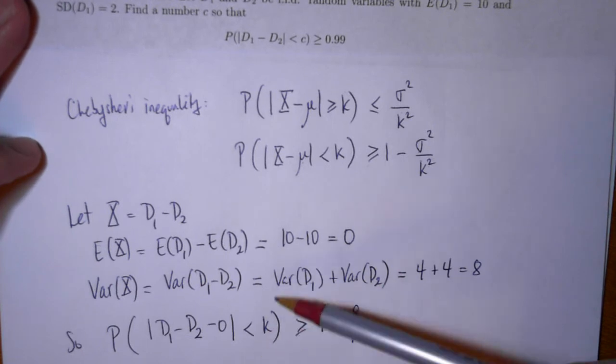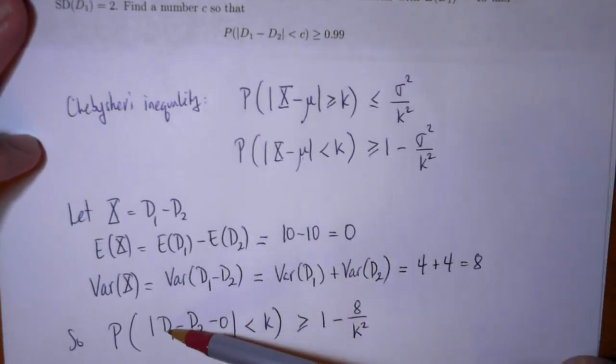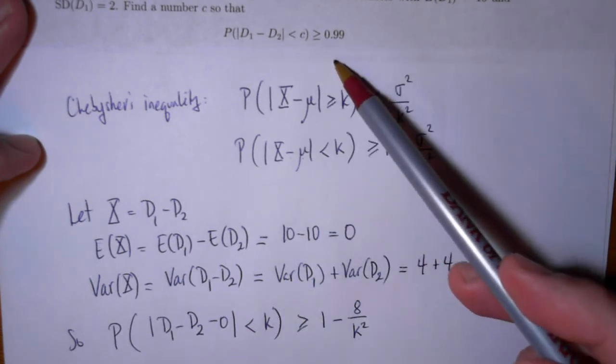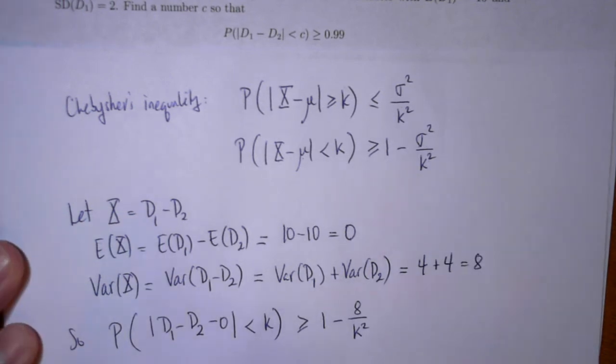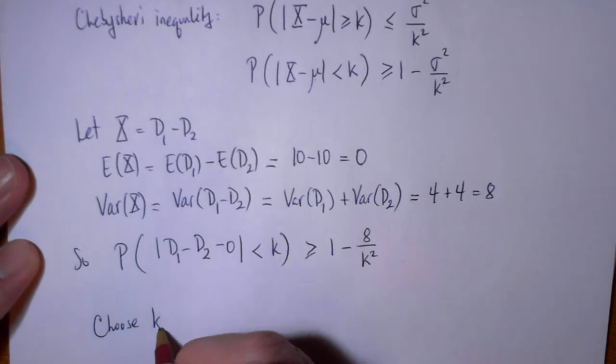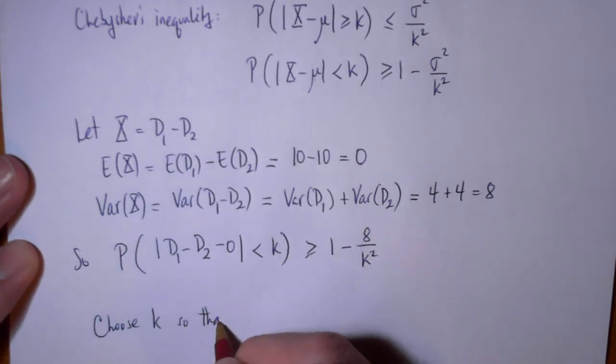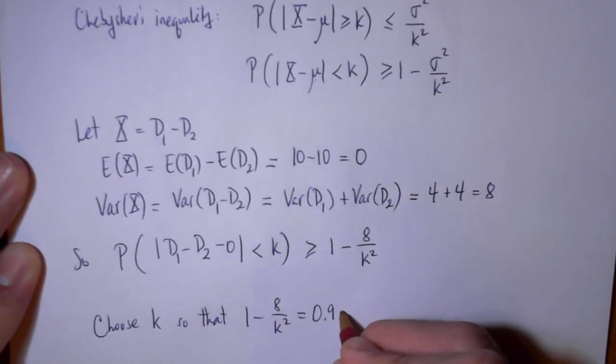Now this matches very closely what I see here. I want the probability of the absolute value of D1 minus D2 less than k to be greater than or equal to 0.99. So to make this work,